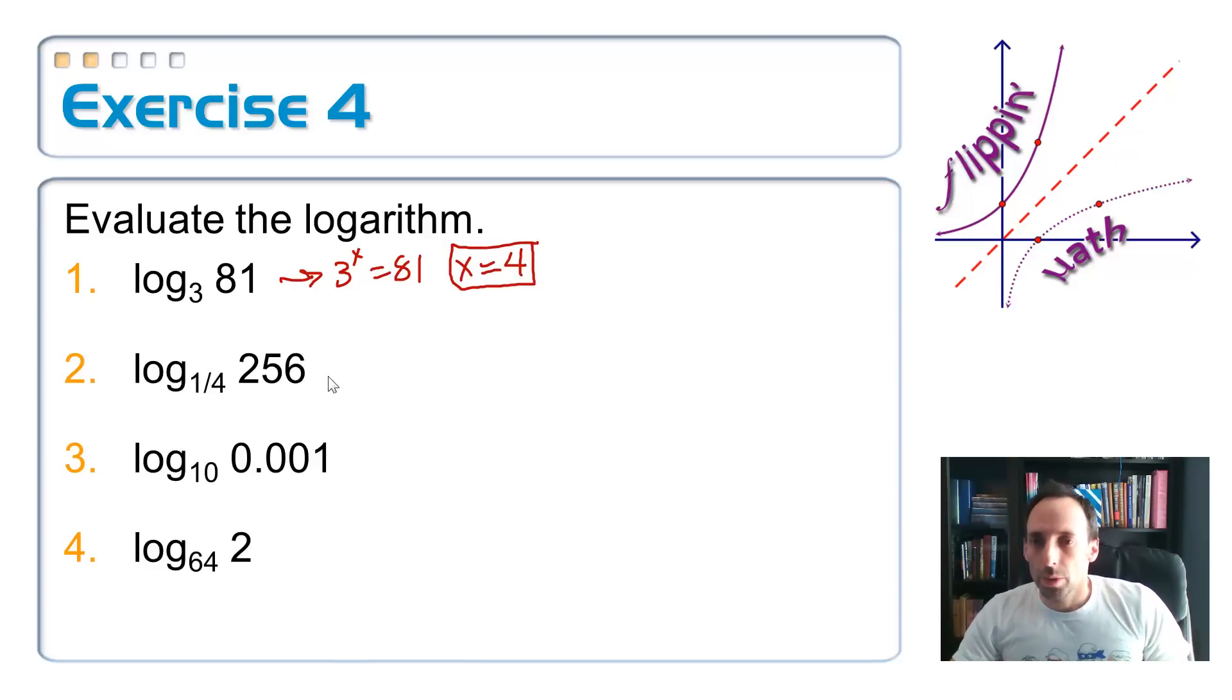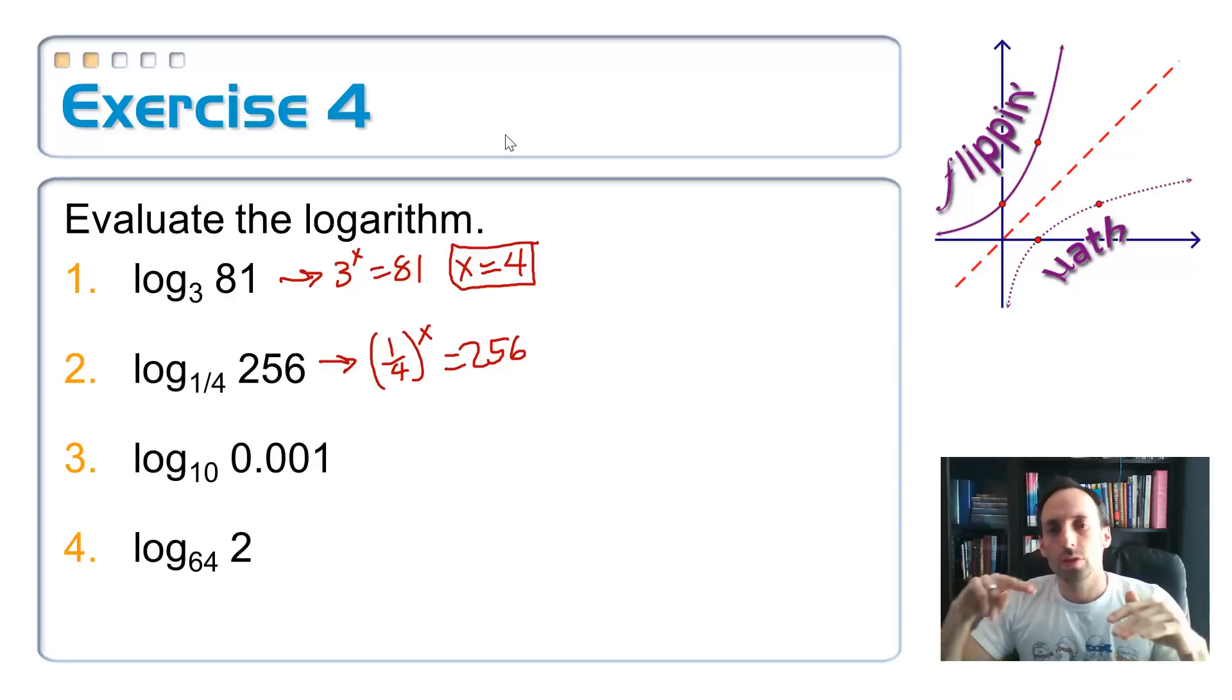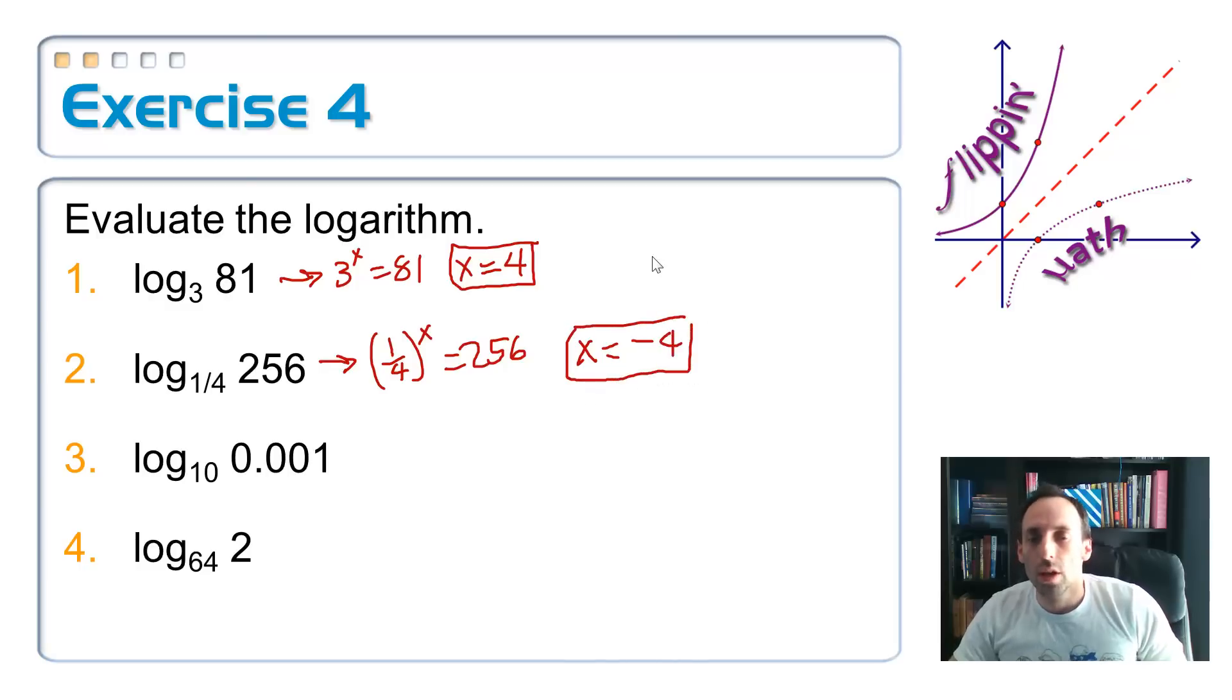Number 2, the base is 1/4, so log base 1/4 of 256, what's that equal to? So 1/4 to what power equals 256? First of all, I'm taking a fraction, and it's getting way bigger. So would you agree that this x value, whatever this exponent has to be, it's got to be negative, right? It's got to be negative so I can flip that 4 upside down. So first of all, x has got to be negative. So now we're asking ourselves: 4 to what power is 256? That is equal to 4. 4 to the fourth power is 256, because 4 times 4 is 16, and 16 times 16 is 256.